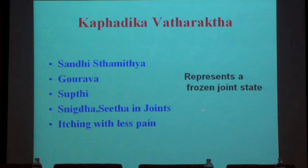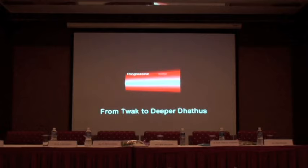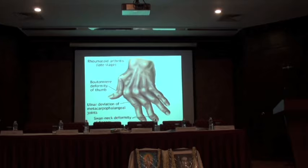The Kaphadhika Vata Rakta is having a frozen joint condition. Now from Twak to deeper Dhatus is the progression. So many people from the modern fraternity have highlighted the role of Ayurveda in preventing deformity. We have to rise to the situation to prevent possible damages. You can see all the flexion deformities, swan-neck deformities, and boutonniere deformities in advanced Vata Rakta.